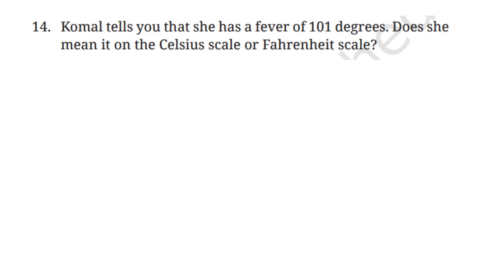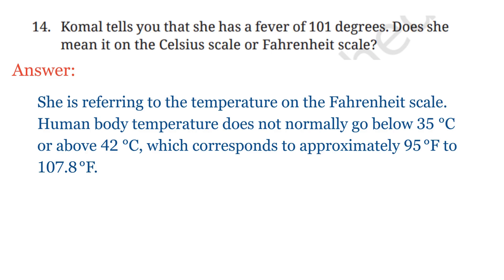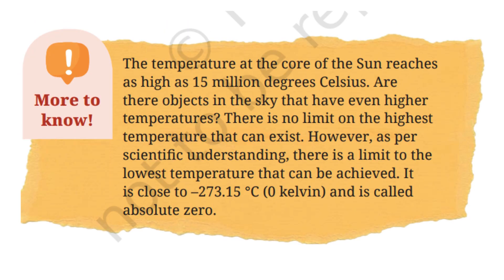Question 14: Komal says she has a fever of 101 degrees — does she mean Celsius or Fahrenheit? She is referring to the Fahrenheit scale, since human body temperature does not normally go below 35°C or above 42°C, which corresponds to approximately 95°F to 107.8°F. The temperature at the core of the Sun reaches 15 million degrees Celsius. As per scientific understanding, there is a limit to the lowest temperature that can be achieved: −273.15°C, which equals 0 Kelvin, called absolute zero.